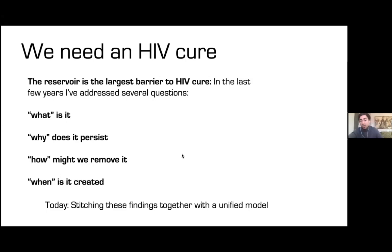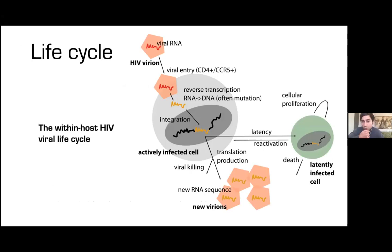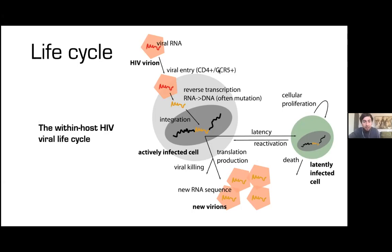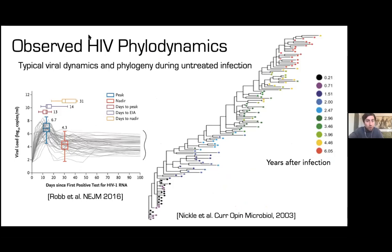Very quickly, the life cycle of HIV: HIV virions infect CD4-positive T cells, the helper cells of the immune system. Viral entry requires that receptor; RNA is reverse transcribed to DNA, often with mutations. The DNA is integrated into the cell's DNA and can go on to make more virions using the cell's machinery. But cells can also enter a latent state, where there's HIV provirus in the host DNA but the cells appear to live like normal T cells.